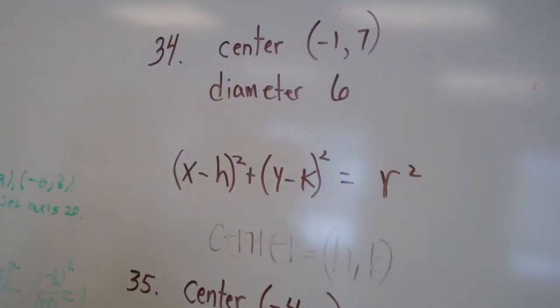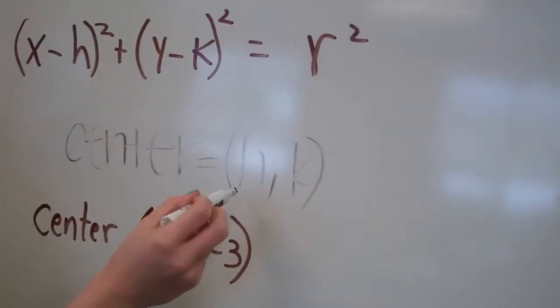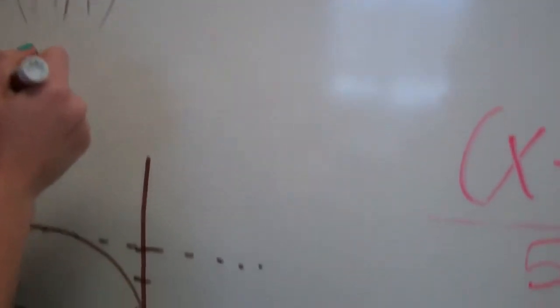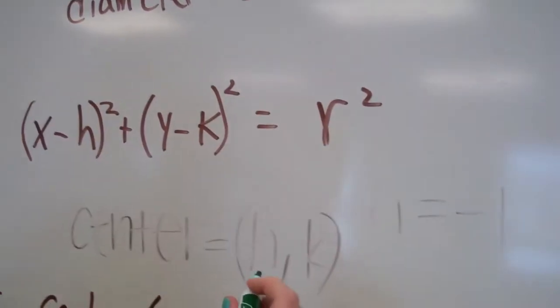34. So the center is negative 1, 7. So the center is h, k, so h equals negative 1. Maybe you want to replace your marker with that green one. And k equals 7.